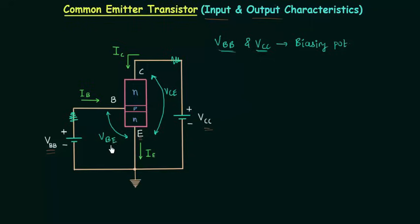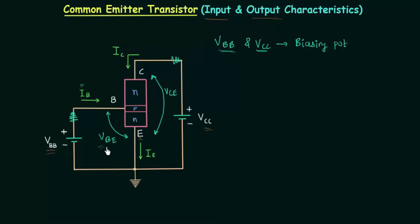So VBE is the input voltage, not VBB, and VCE is the output voltage, not VCC. In the input characteristics of common emitter transistor we need to plot the graphical relation between the input current IB and the input voltage VBE for the different values of output voltage VCE.